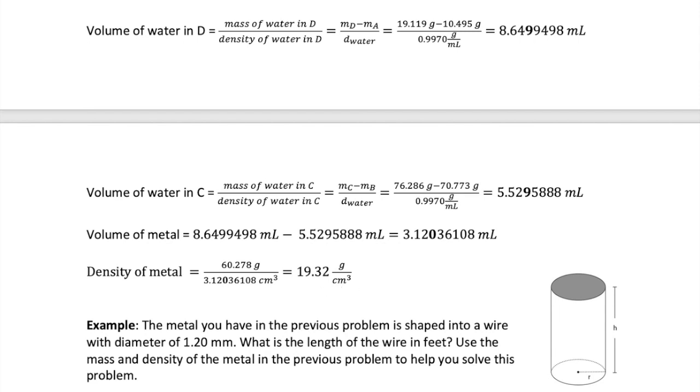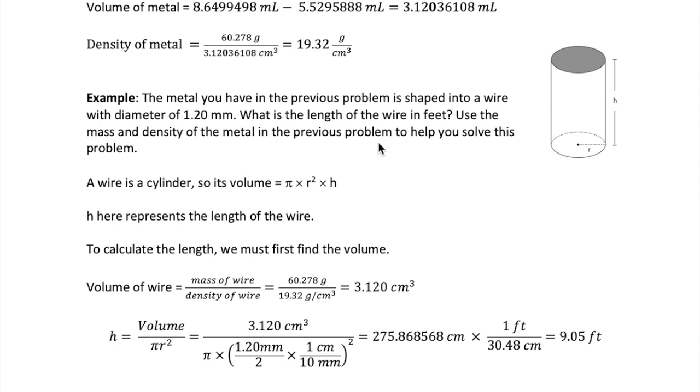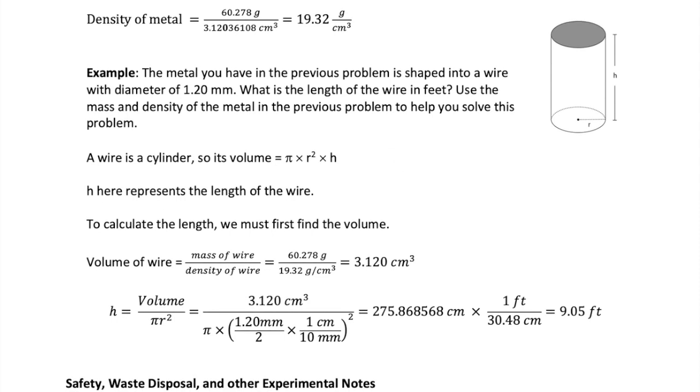The answer is rounded to four significant figures based on the precision of our instrument. So this next example is very similar in concept to the question you will see in your lab report. So let's say the metal you just obtained or you used in your experiment are pounded to the shape of a wire. The question is, if the diameter of the wire is 1.20 millimeters, what would be the length of the wire in feet if you have the mass of the metal from your experiment?